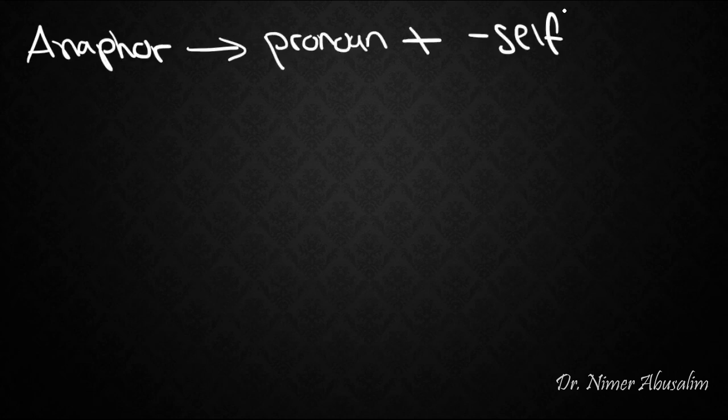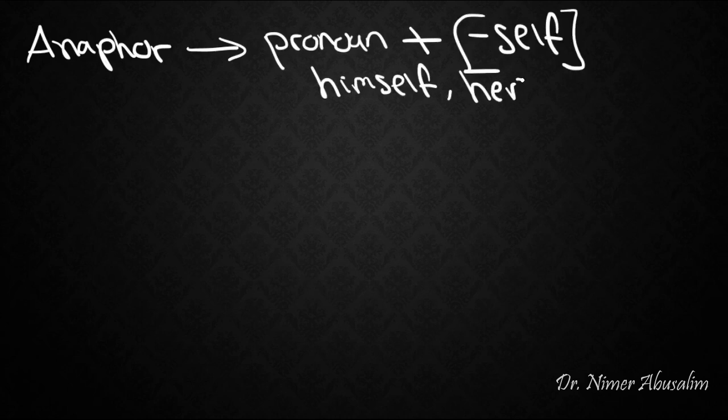So let's take an example of how we use the scientific method. An anaphor, quite simply, is a pronoun plus the suffix self. Examples are himself and herself. So let's pretend that we want to find out what the rules of anaphors are in the minds of a native speaker. And let's also pretend that we don't know anything about English so far.